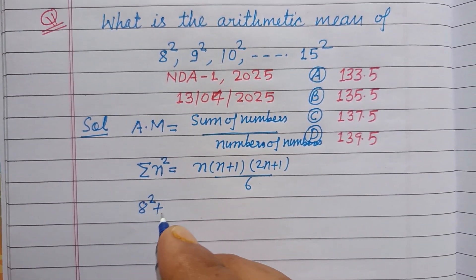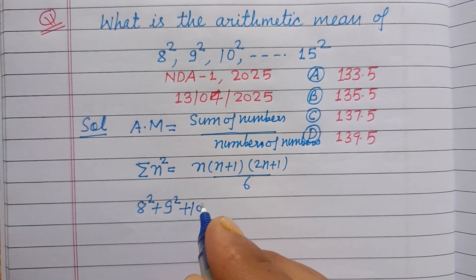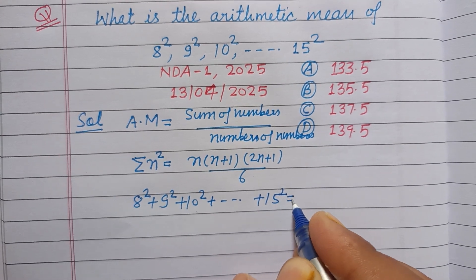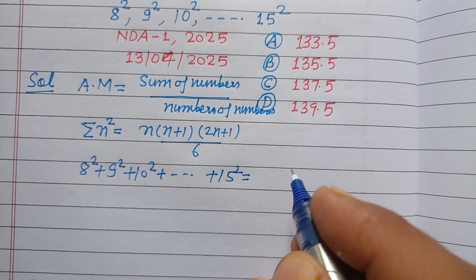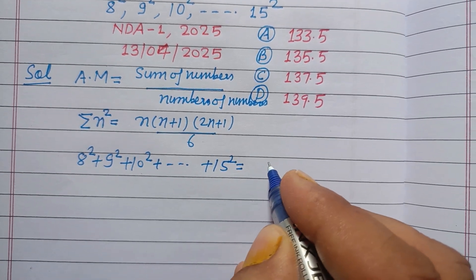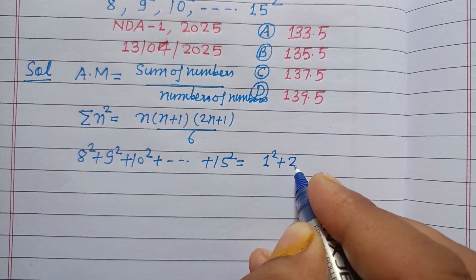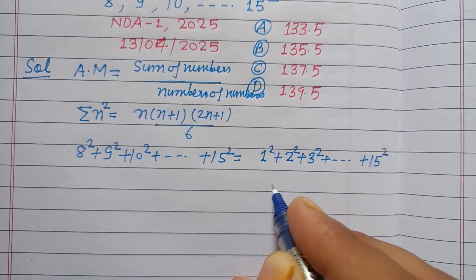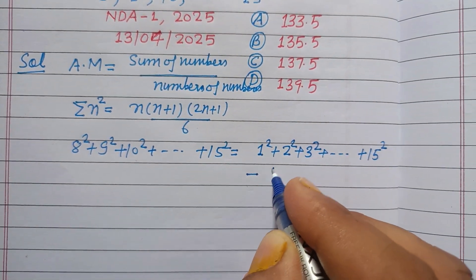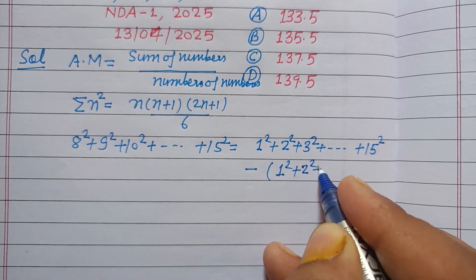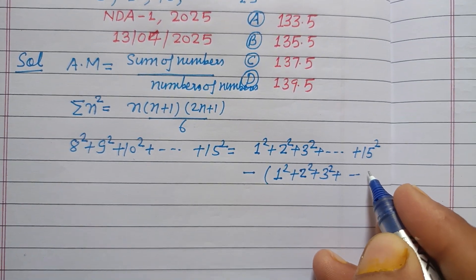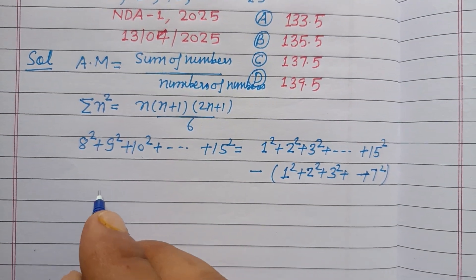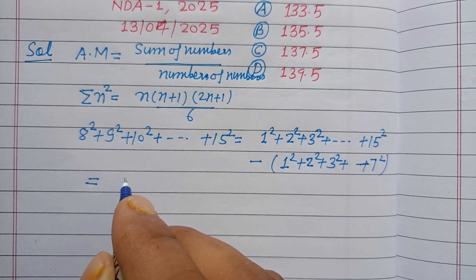So we write: 8 square + 9 square + 10 square + ... + 15 square equals (1 square + 2 square + 3 square + ... + 15 square) minus (1 square + 2 square + 3 square + ... + 7 square).